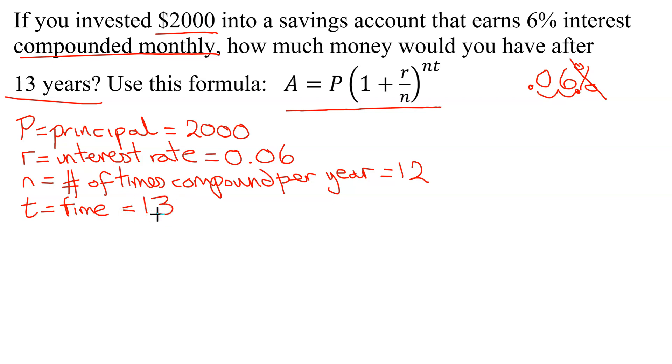So now all we have to do is plug the numbers into our formula. So we know A equals P, which is 2,000, times 1 plus R is 0.06, divided by N, which is 12, all raised to the 12 times T, which is 13.